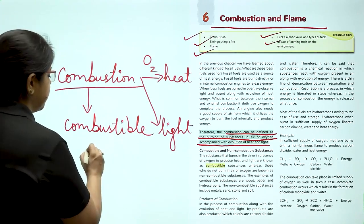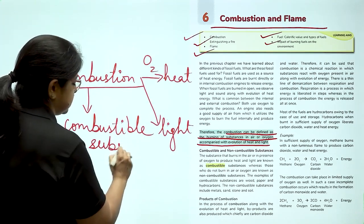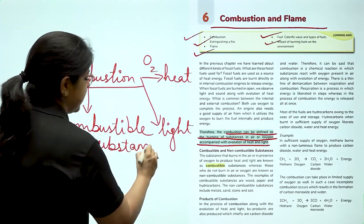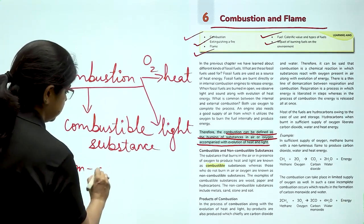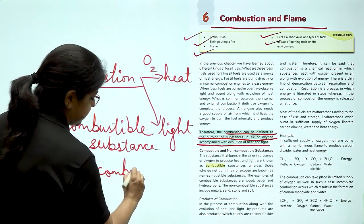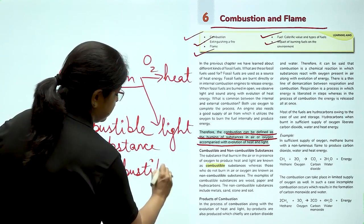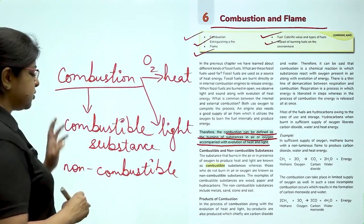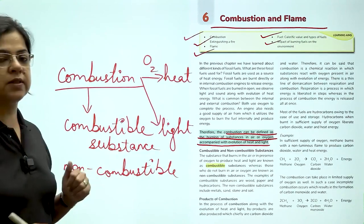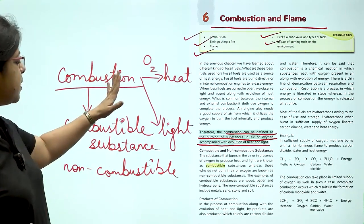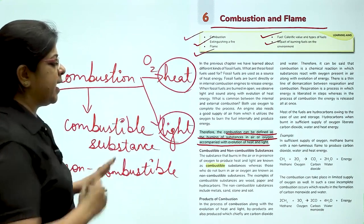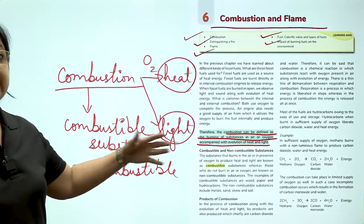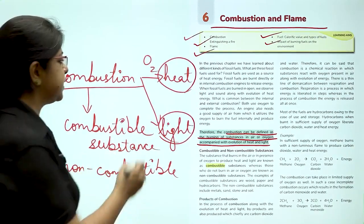So paper is a combustible substance. And plastic, heavy duty plastic will be a non-combustible substance. So here we get to know about these two types of substances. Now as a result of combustion, what is formed? Heat is formed and light is formed. But is there anything else also that is formed? Yes.